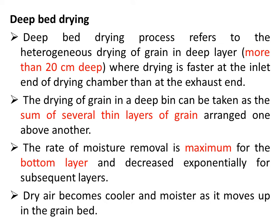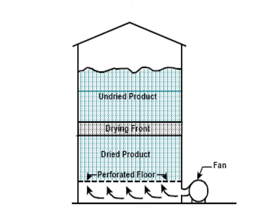In deep bed drying, the layer must be more than 20 centimeters in thickness — it is essentially the sum of several thin layers of grain. The rate of moisture removal is always maximum for the bottom layer and decreases exponentially for subsequent layers going upward, as the dry air becomes cooler and picks up moisture as it moves up. Deep bed drying is not as effective as thin layer drying.